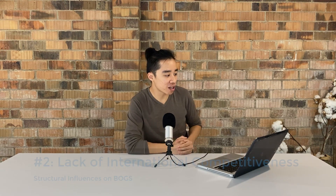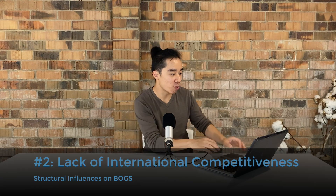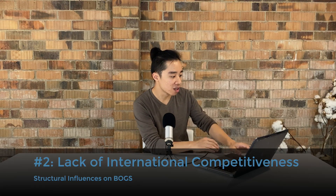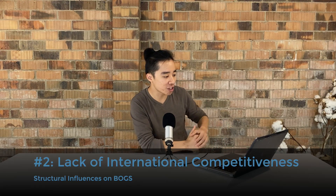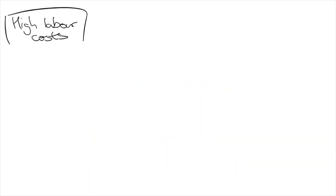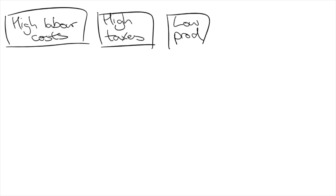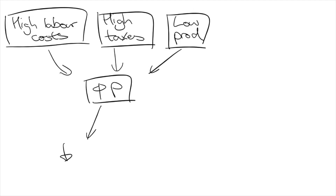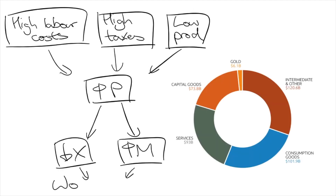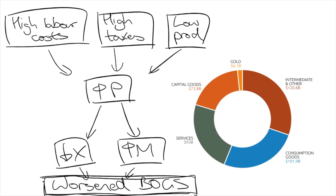The second structural issue that causes a BOGS deficit is that we lack international competitiveness. The costs of production in Australia are very high, which can be attributed to high centralised wages, high taxes that get passed on in the form of higher prices, as well as comparatively low productivity overall. This leads to us shutting down many export industries such as manufacturing, and we end up importing high value-added products — both of which worsen the BOGS deficit.